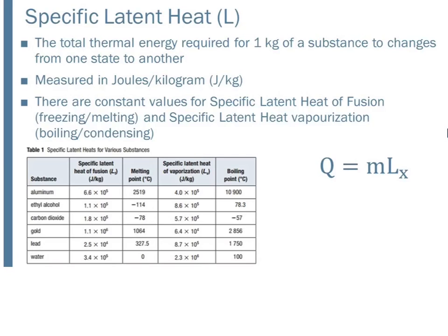So specific latent heat values are given in a chart. You'll either be given those on your test or you'll have to look them up. We have heats of fusion. Heats of fusion are for things that are at the freezing temperature or the melting temperature because that temperature is the same. So freezing and melting would be our fusion. And then heat of vaporization is for boiling or condensing. So really you just have to read the question carefully and figure out which chart you're reading from and you're good to go.